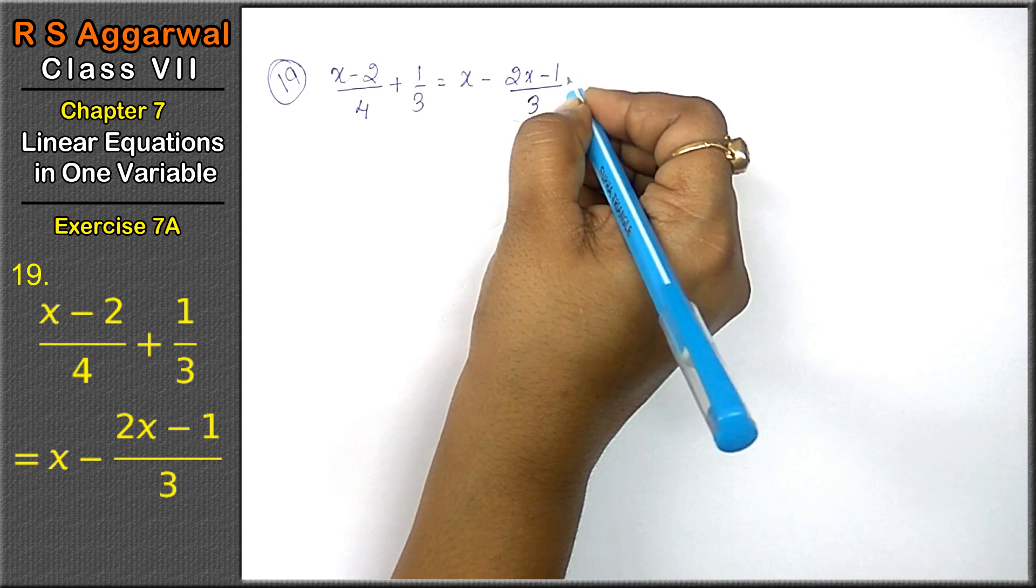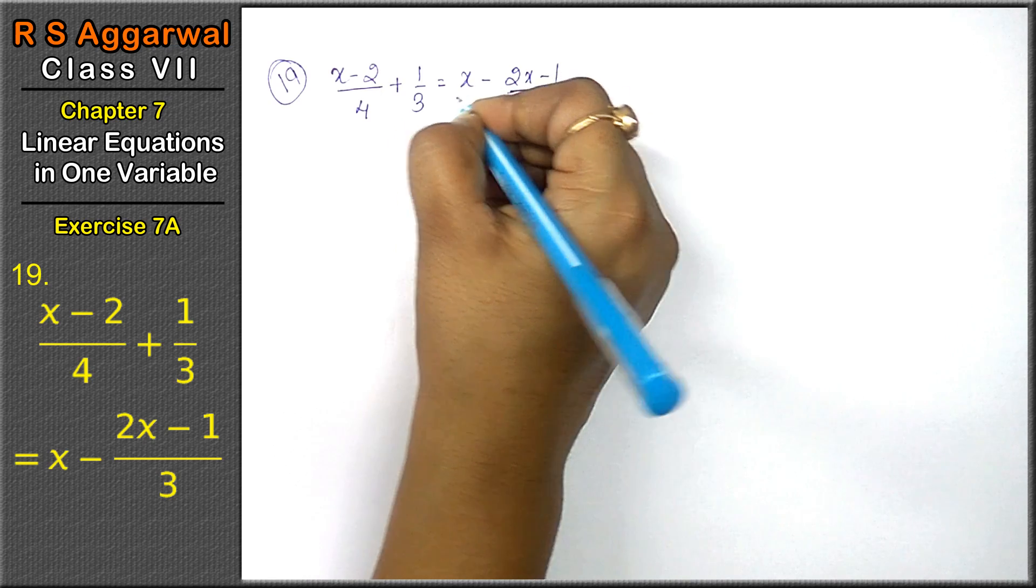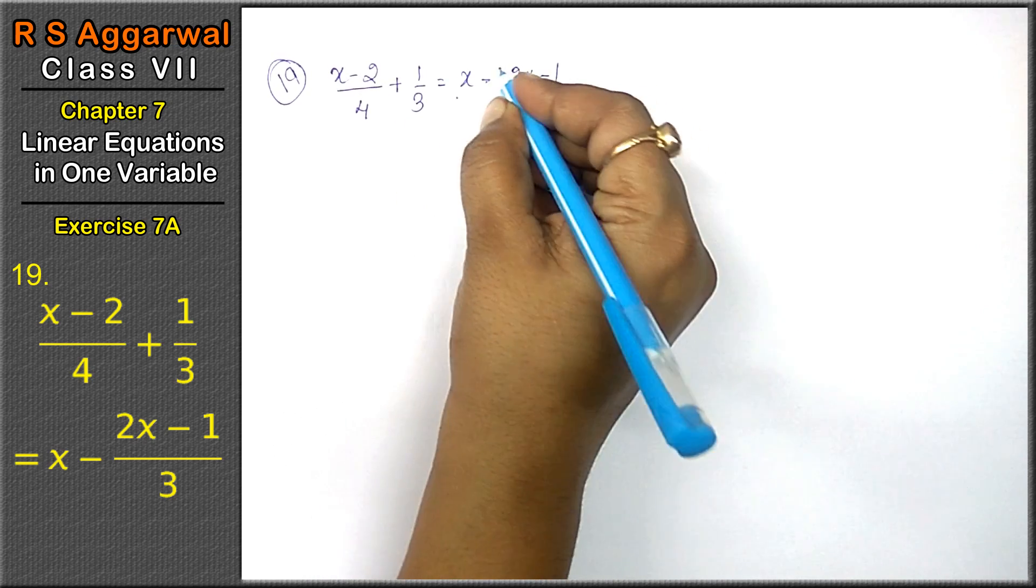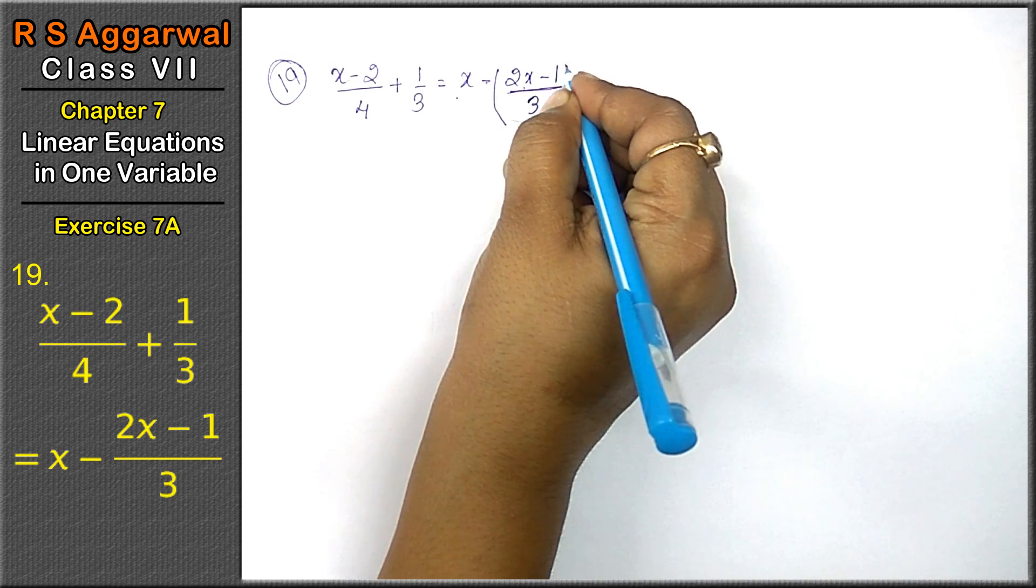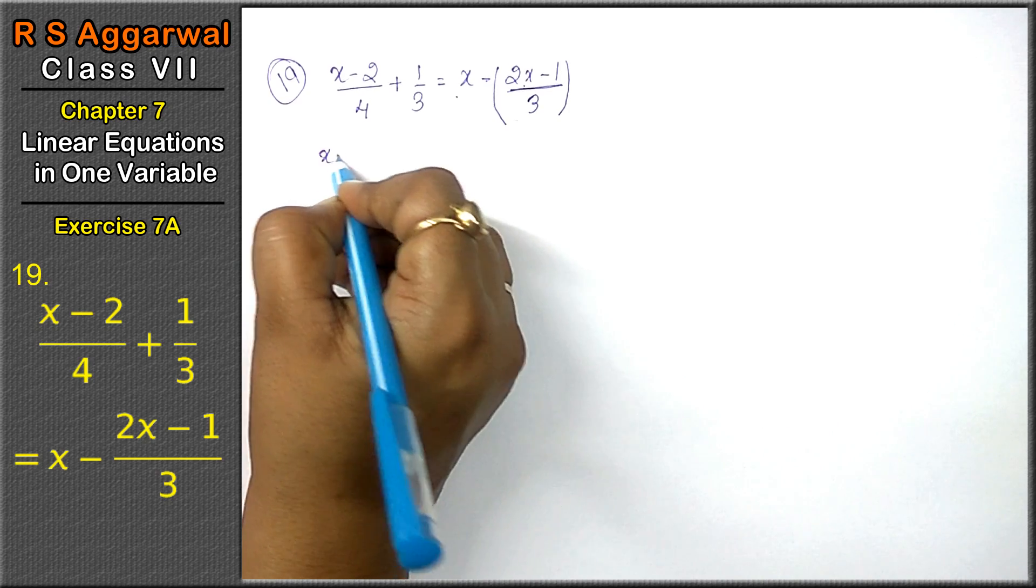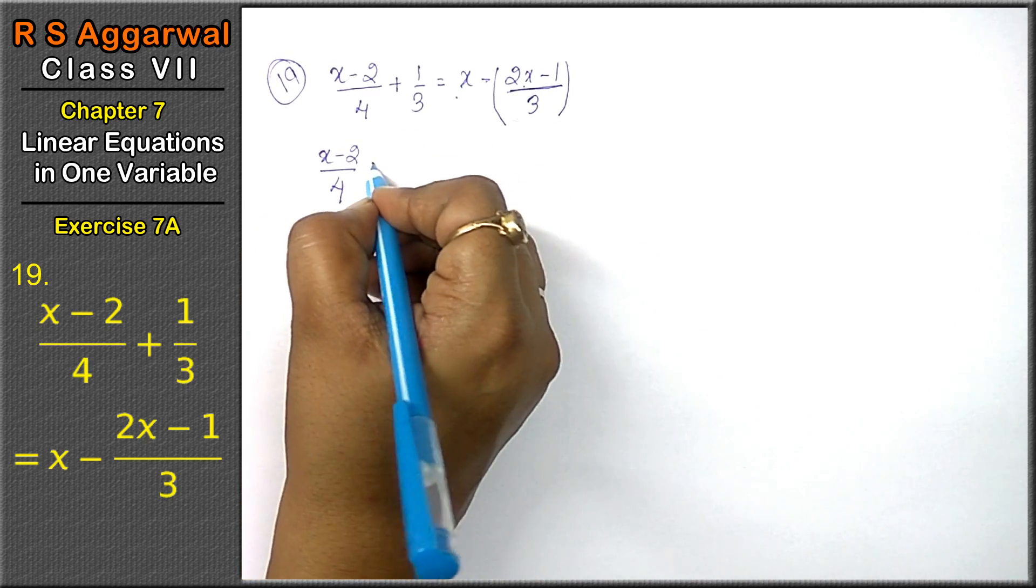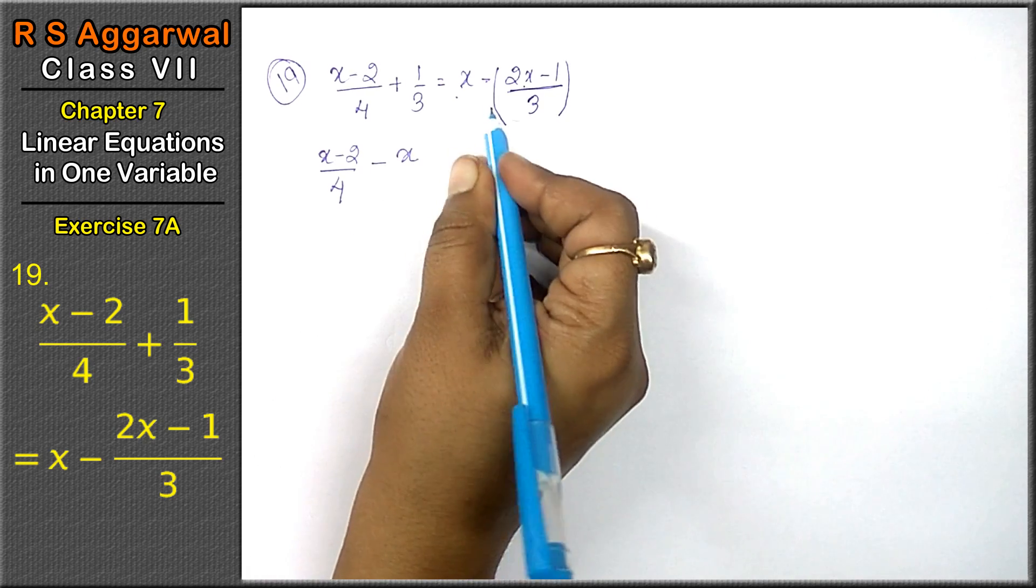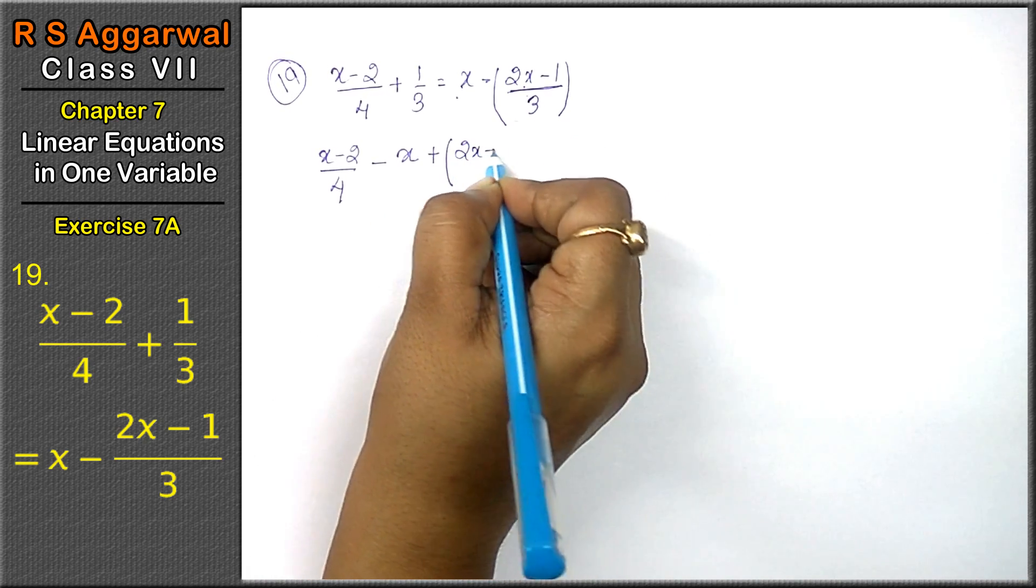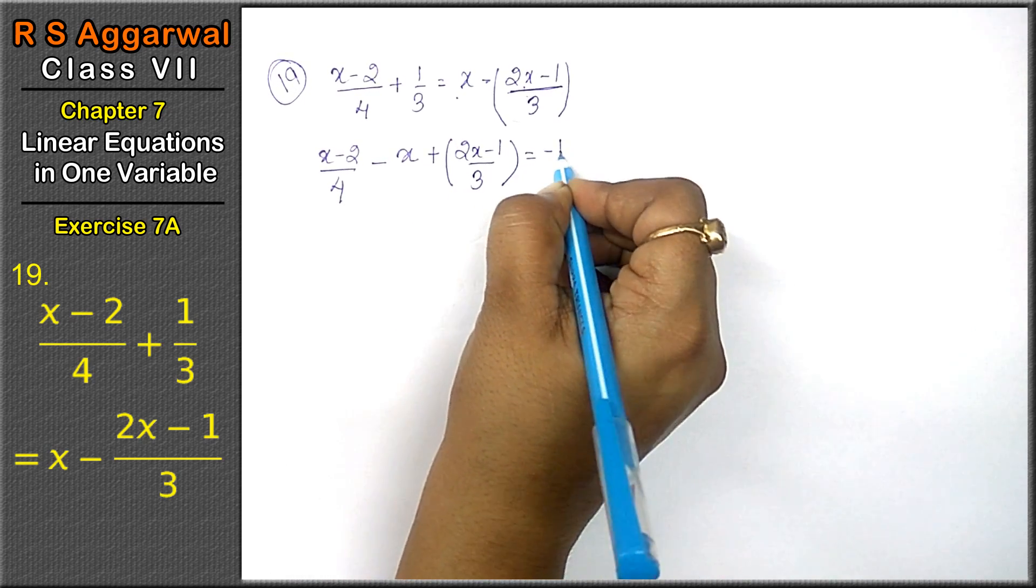Friends, when the x term is in the denominator but there's nothing below this value, we take it in a bracket. Now we take x-2, and this x term. This was plus, so minus x. If it was minus, it would be plus. So we get (2x-1)/3 = -1/3.